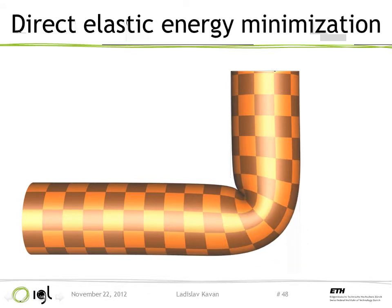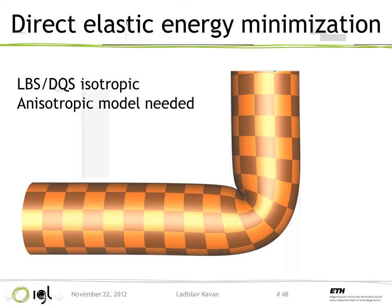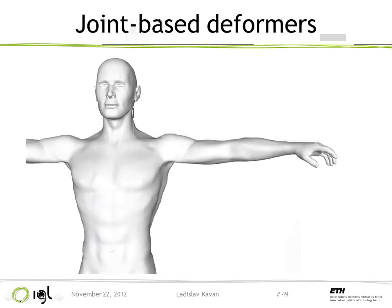There is a fundamental problem behind both linear and dual quaternion skinning: they treat all directions as equal, but they are not. There are rigid bones inside, so the material should resist deformations much more in the direction along the rigid bone than in the orthogonal directions — that's where the squish and stretch happens. We need a different model, a model that can capture this anisotropy.